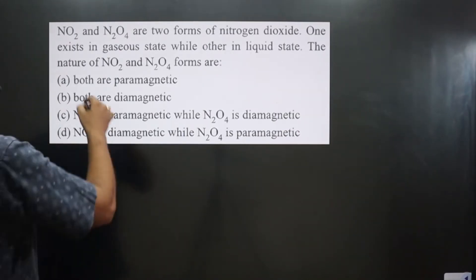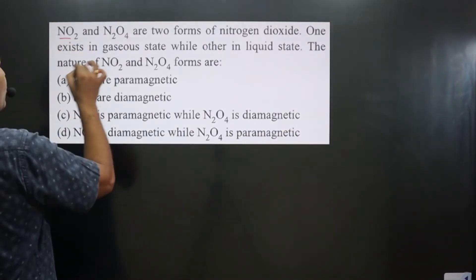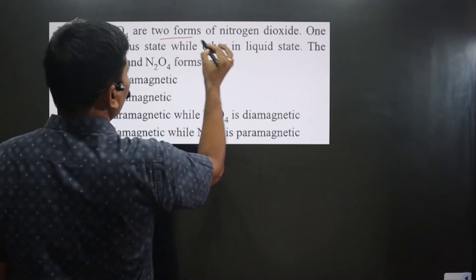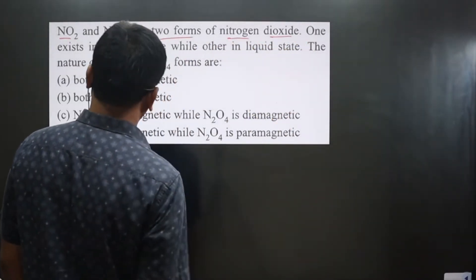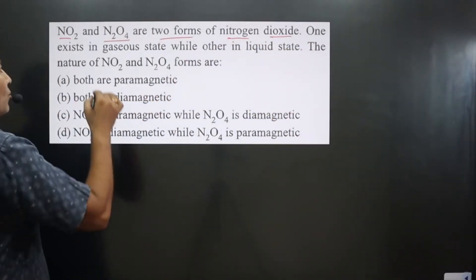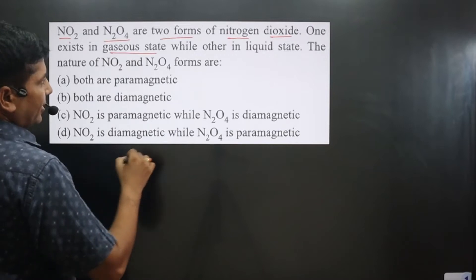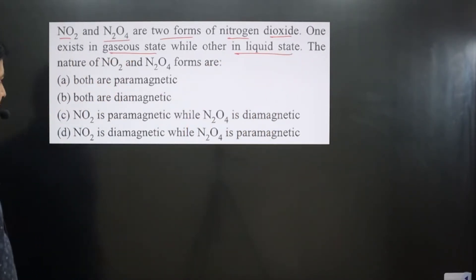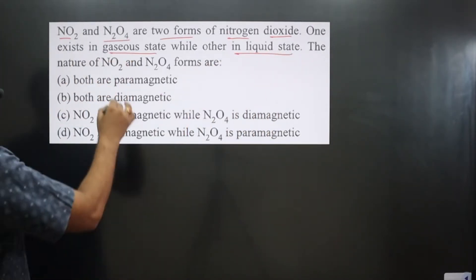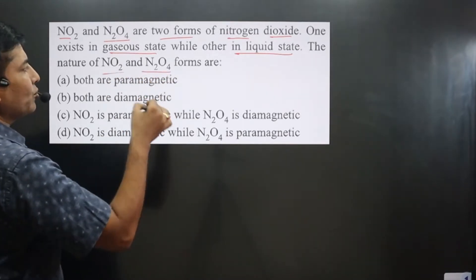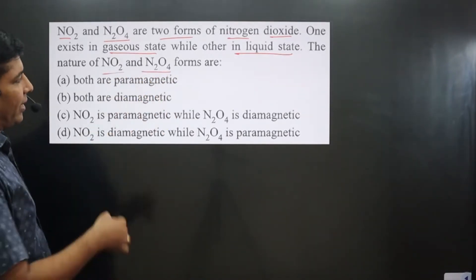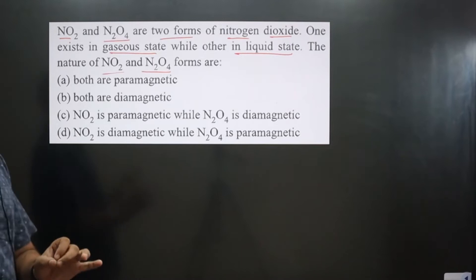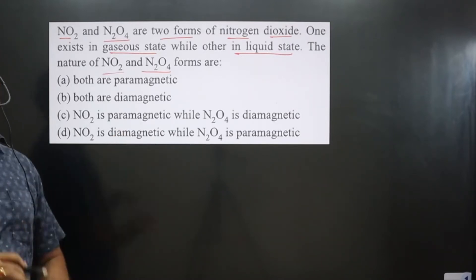The question says NO₂ and N₂O₄ are two forms of nitrogen dioxide. One exists in the gaseous state while the other is present in liquid state. The question asks about the magnetic nature — paramagnetic or diamagnetic — of NO₂ as well as N₂O₄. This question is related to the magnetic properties of molecules.